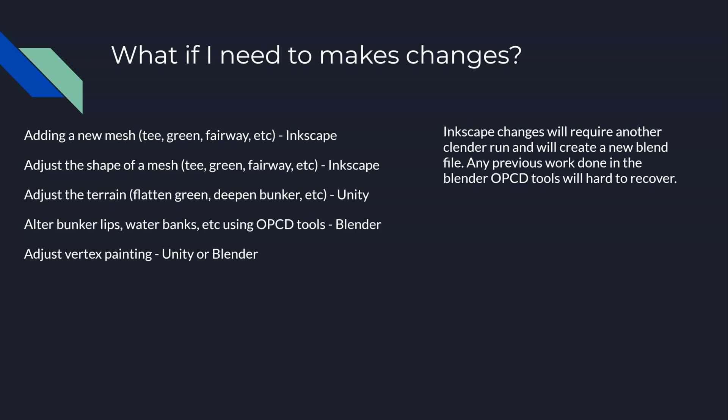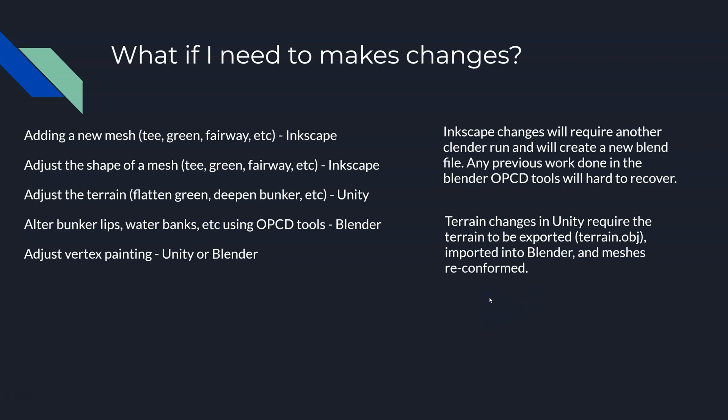If you're going to adjust the terrain, that's pretty simple. You go into Unity, make those changes with RAM or the Unity tools, and then export that terrain OBJ again. You import it just like before and reconform the meshes. That's not a new Blender file — that's your existing Blender file. You reimport the terrain, reconform the meshes, and export those meshes to FBX again, then overwrite the previous FBXs.